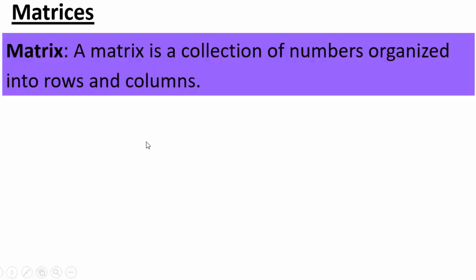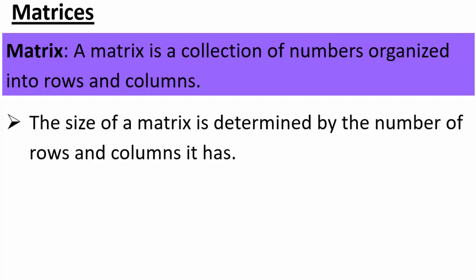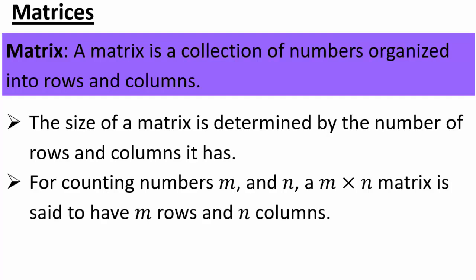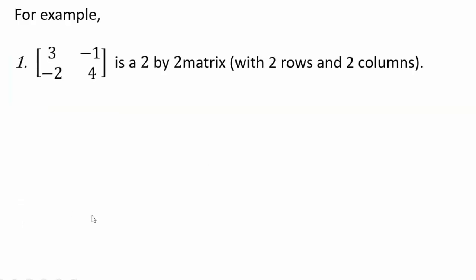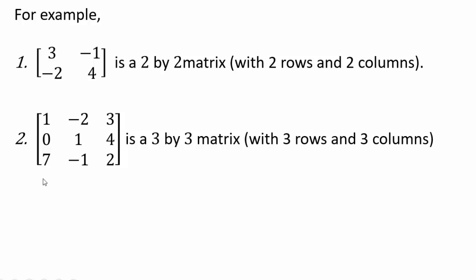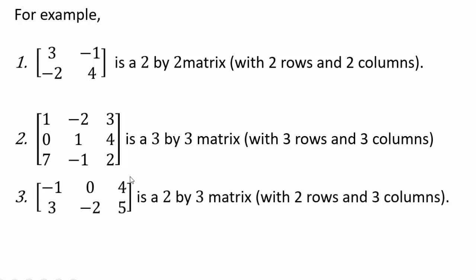So let's talk about what a matrix is. A matrix is a collection of numbers organized into rows and columns. The size of a matrix is determined by the number of rows and columns it has — we call the number of rows m and the number of columns n. So an m by n matrix is an organization of numbers in m rows and n columns. For example, a 2 by 2 matrix has 2 rows and 2 columns; a 3 by 3 matrix has 3 rows and 3 columns. They don't always have to be square — you could have a 2 by 3, which would have 2 rows and 3 columns, and so on.